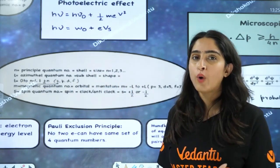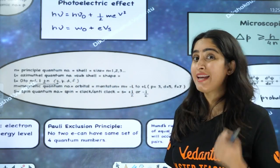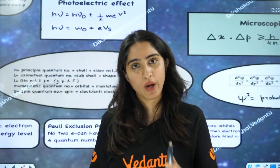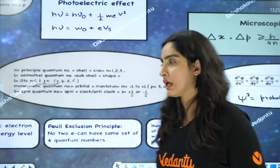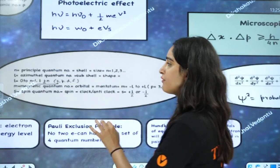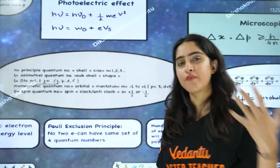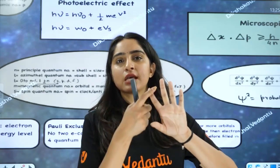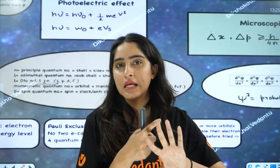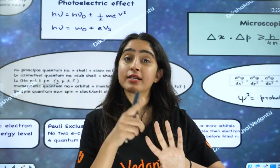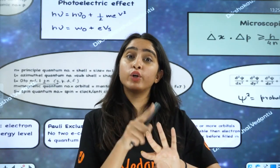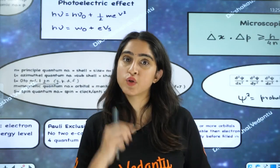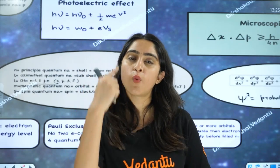L ranges from 0 to N minus 1, and L can never be greater than or equal to N. For the subshell notation: L = 0 is S, L = 1 is P, L = 2 is D, L = 3 is F.